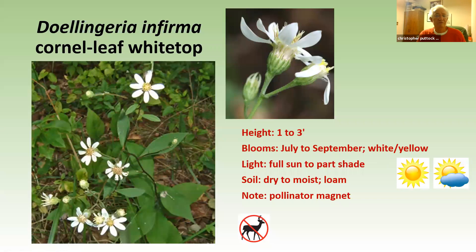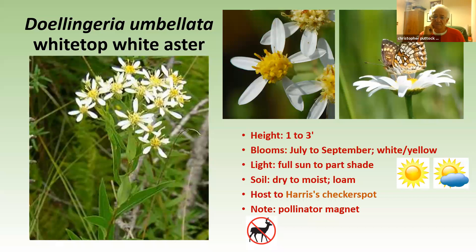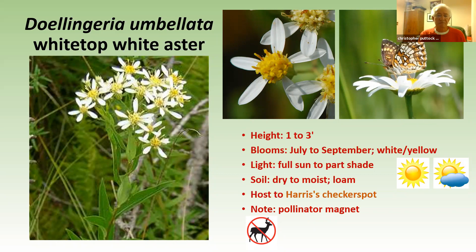The cornel-leaf white-top we have growing in the greenhouse — I collected some and we've been bulking it up, so it's not on our list for sale yet. Doellingeria umbellata is a mountain species that doesn't really get down to the coastal plains — that's one reason we don't grow it. It is the host of the Harris's checkerspot, which is an endangered butterfly in Maryland that's just barely hanging on.